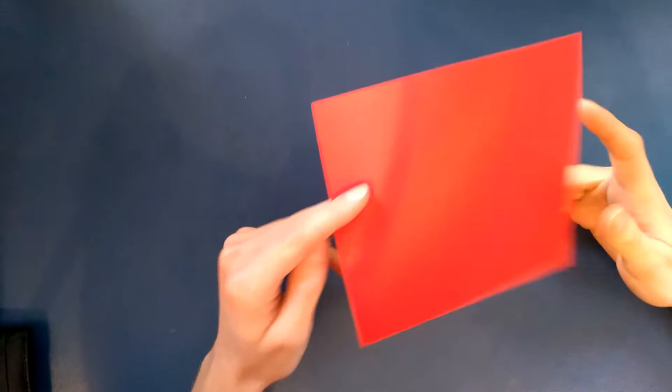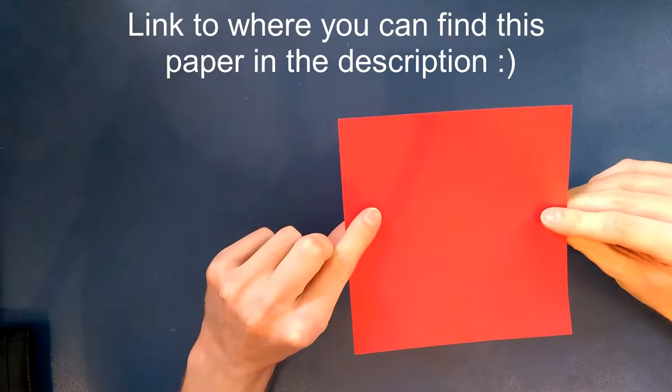Hey guys, this is Sam from aliveorigami.com and today we're going to be making the origami letter W. You want to start with just your square of origami paper, 15 by 15 centimeters, colored one side, white the other.